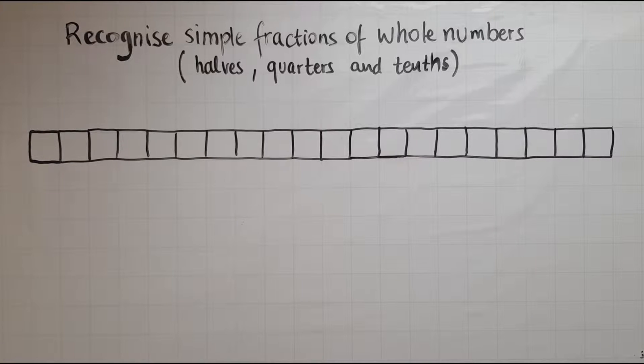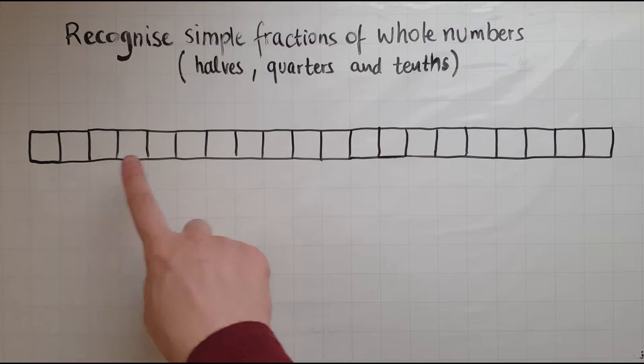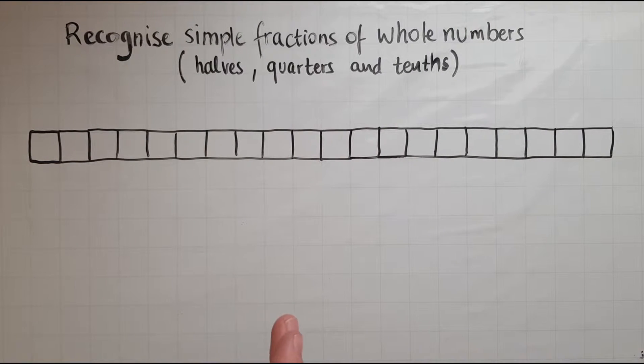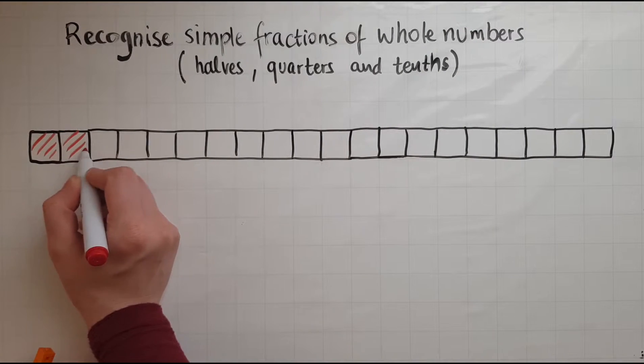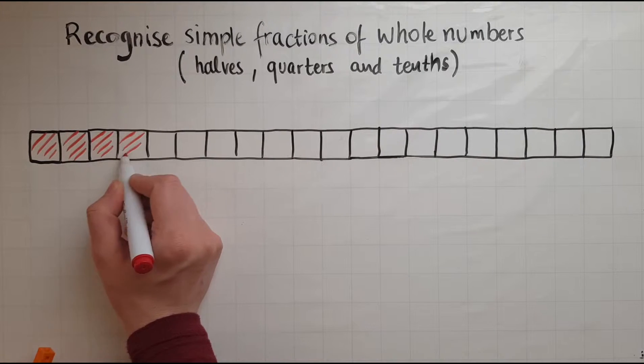So we'll try now to find half of 20. I've got 20 squares lined up. I need to find half of it. So since there are 20, I know that half of 20 is 10, because 10 and 10 makes 20. So I will highlight 10 of these or half of it.